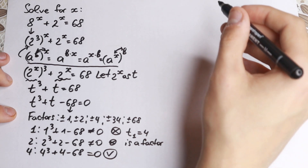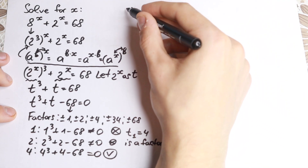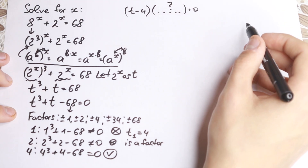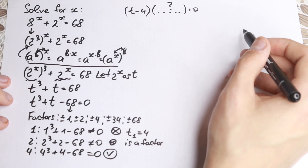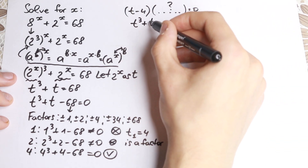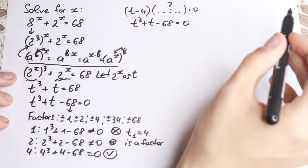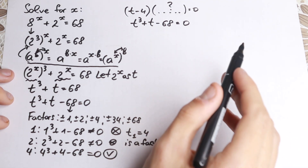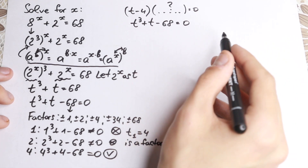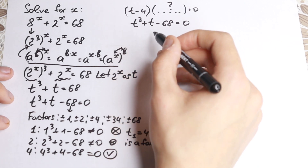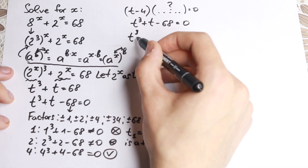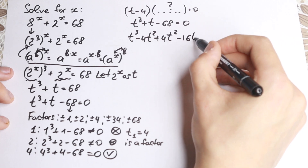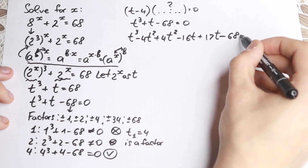But what about the other parentheses? Because when we factor t minus 4 from the first parentheses, there will be an expression in our second parentheses equal to 0. I want to show students a really interesting approach. So we have t cubed plus t minus 68, and I write under this expression: t cubed minus 4t squared plus 4t squared, then minus 16t plus 17t minus 68 equal to 0.